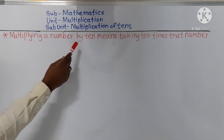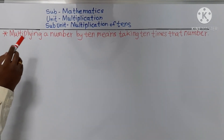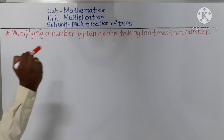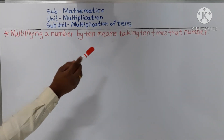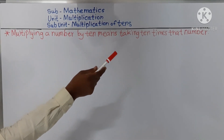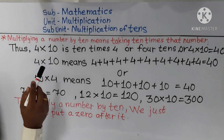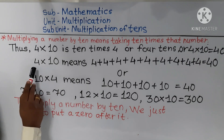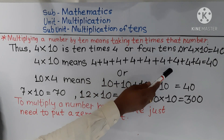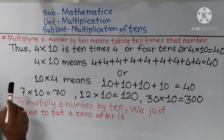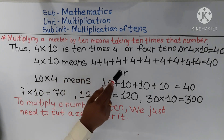Multiplying a number by 10 means taking 10 times that number. For example, 4 multiplied by 10 means 4 plus 4 plus 4 plus 4 plus 4 plus 4 plus 4 plus 4 plus 4 plus 4. The answer is 40. Here I added 4, 10 times.